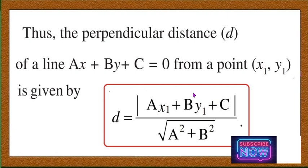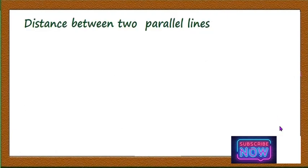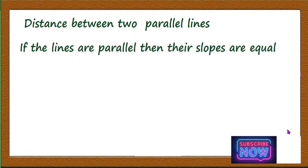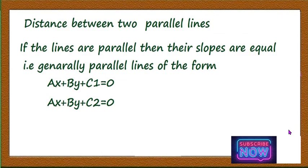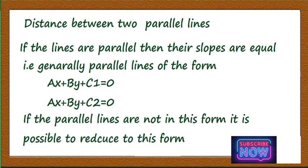You have to remember this result: the perpendicular distance d of the line ax + by + c = 0 from a point (x1, y1) is d = |ax1 + by1 + c| / √(a² + b²). Now let us come to the last part: the distance between parallel lines. If the lines are parallel, then their slopes are equal, and parallel lines are generally of the form ax + by + c1 = 0 and ax + by + c2 = 0.